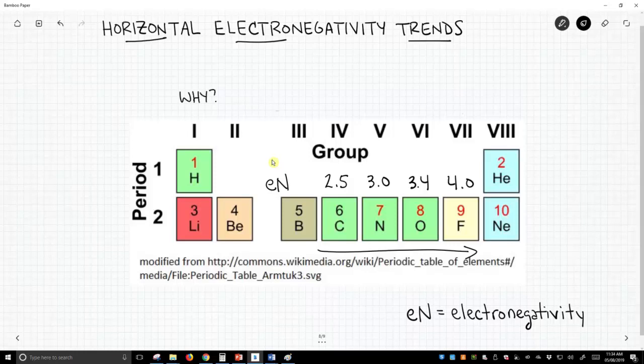We can connect this to the idea of effective nuclear charge. Effective nuclear charge also increases as we move across the periodic table. Remember, effective nuclear charge for neutral atoms is simply equal to the group number or the number of valence electrons.